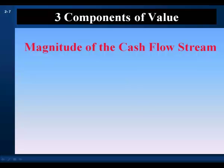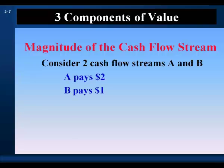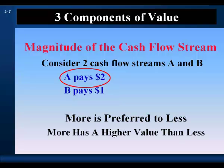The first component of value is the magnitude of the cash flow stream. Consider two cash flow streams, A and B. A pays $2, B pays $1. A rational person would choose A, everything else equal, because more is preferred to less, and so more has a higher value than less.